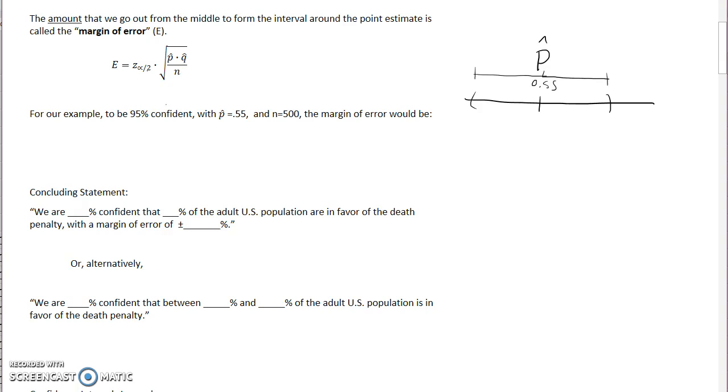And it's formed by the following formula. You take your Z alpha over 2 value, which we talked about in the last video, and you multiply it by the square root of P hat, which is your point estimate, times Q hat, which is the complement of your point estimate. Remember, we're going to find Q hat here by doing 1 minus P hat, and then N is going to be the size of your sample.